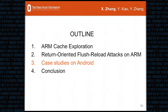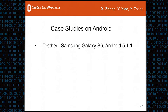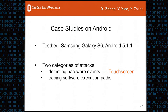Now let's look at some case studies. Our testbed is a Samsung Galaxy S6 with Android version 5.1.1. We present two categories of attacks: detecting hardware events, specifically an attack on the touch screen, and tracing software execution paths, specifically an attack on SurfaceFlinger.